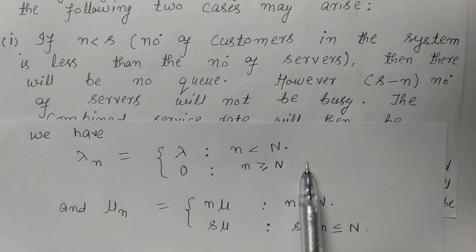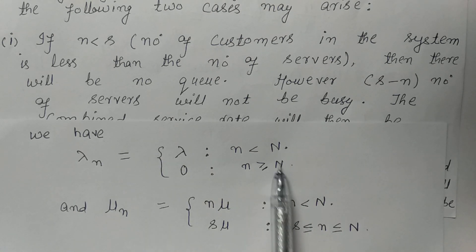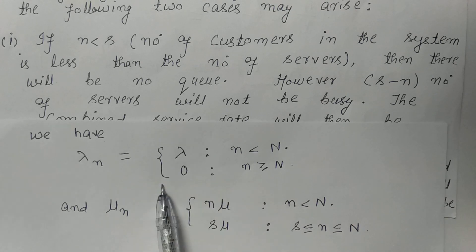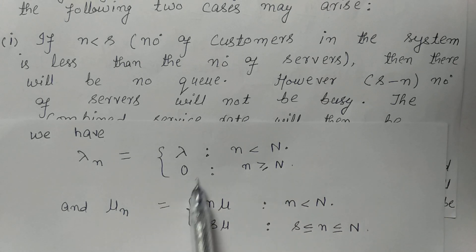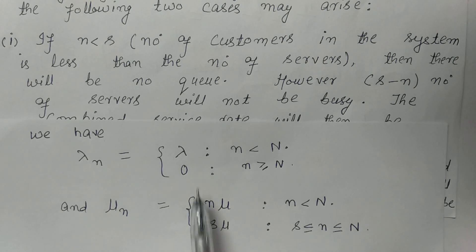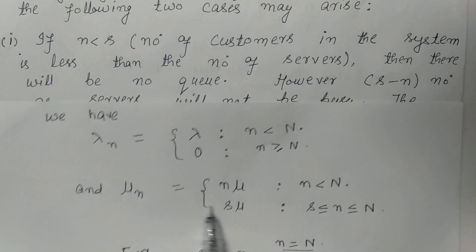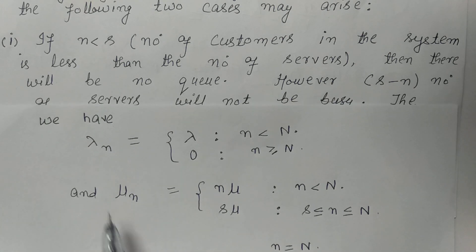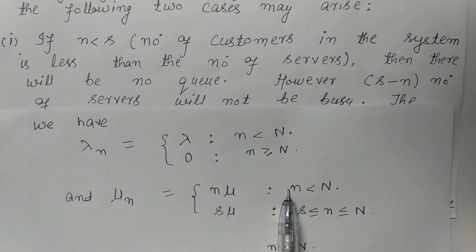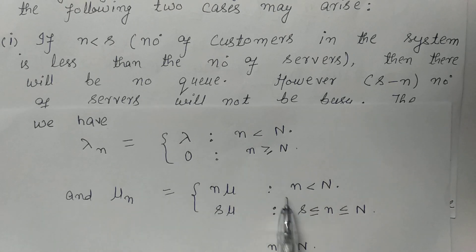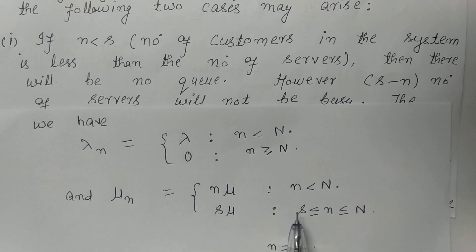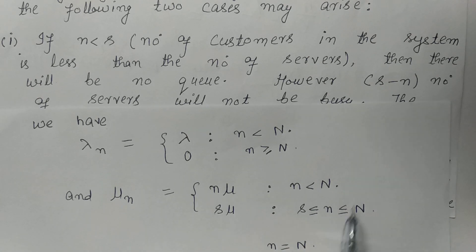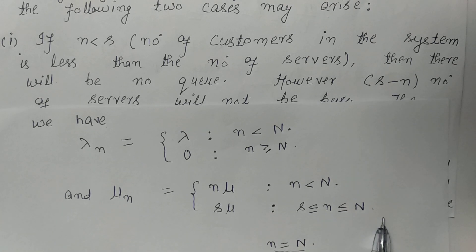When the space is full, no customer will be permitted to arrive, so λ_N will be zero. To summarize: μ_N equals N·μ when N is less than S, and S·μ when S is less than or equal to N and less than or equal to capital N.